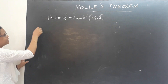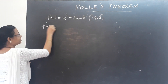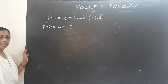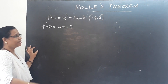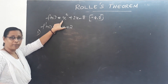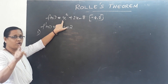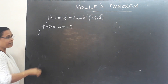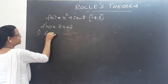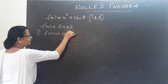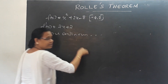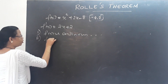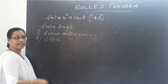The function f(x) = x² + 2x − 8 is a polynomial function. Polynomial functions are continuous and differentiable everywhere. So the first condition — f(x) is continuous — is satisfied because the function is a polynomial. The second condition — f(x) is differentiable — is also satisfied.